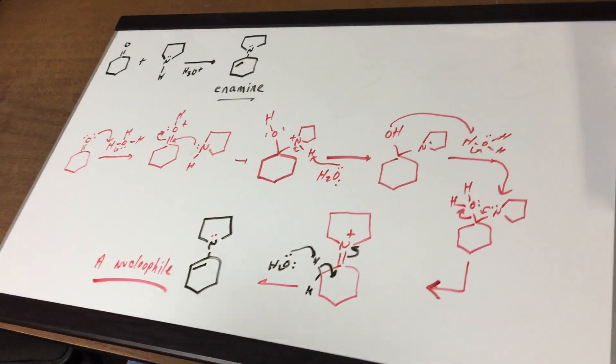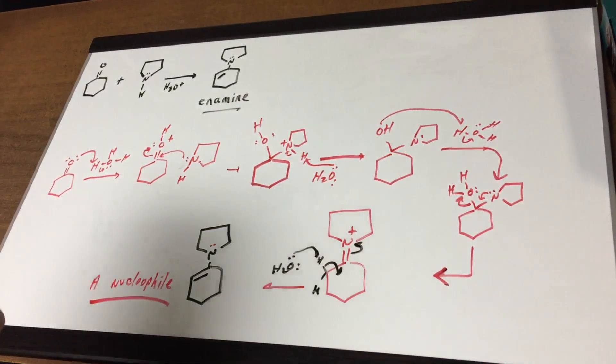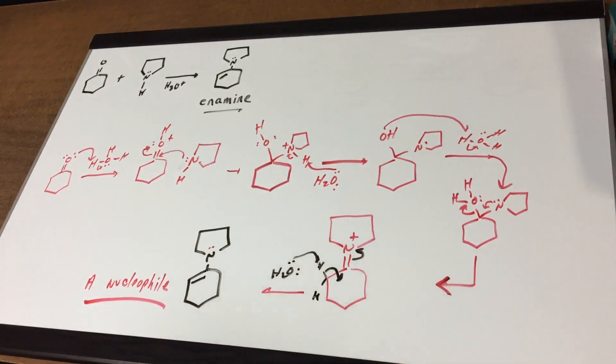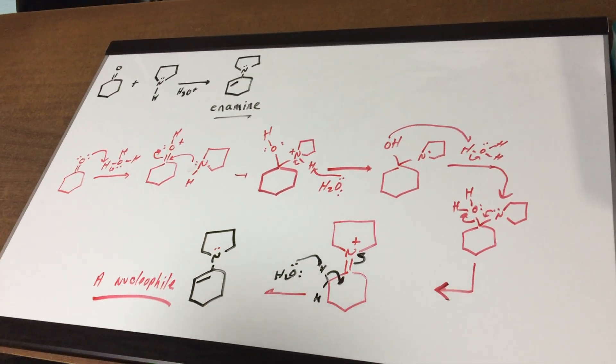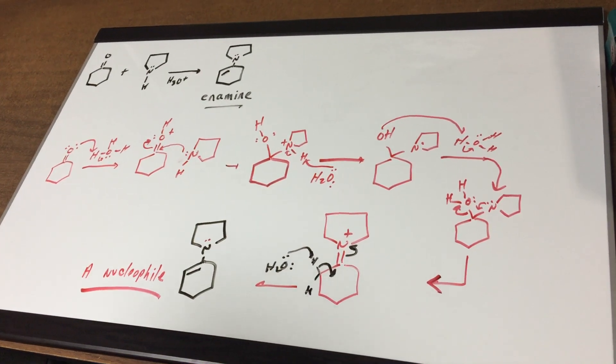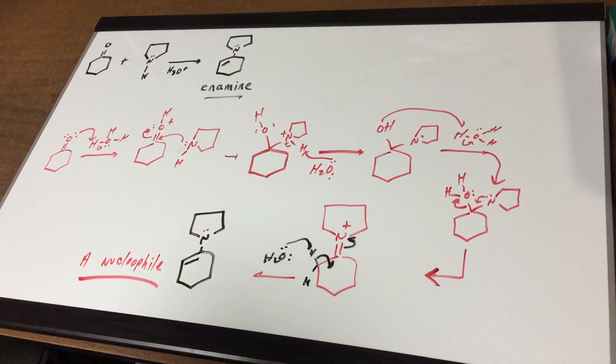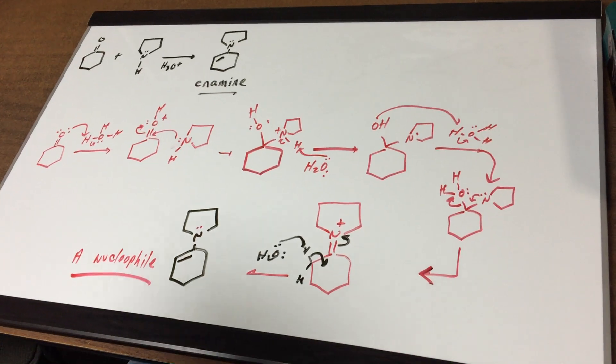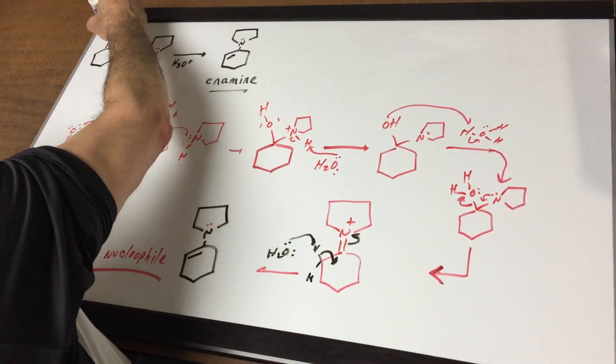And that is called an enamine. What you do when you have an aldehyde or ketone with a secondary amine, you form a compound called an enamine. What I'm going to do here is you have an O and you have an H, and I'm going to take off the alpha proton.